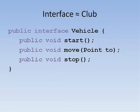For Java interfaces, the dues are a list of methods a class is required to implement. Here we see an interface Vehicle with three methods: start, stop, and move.